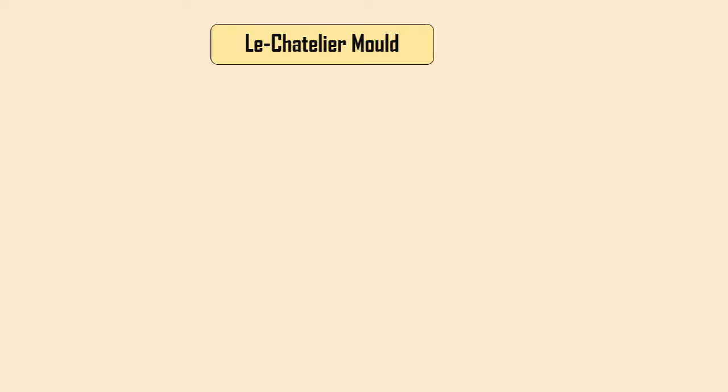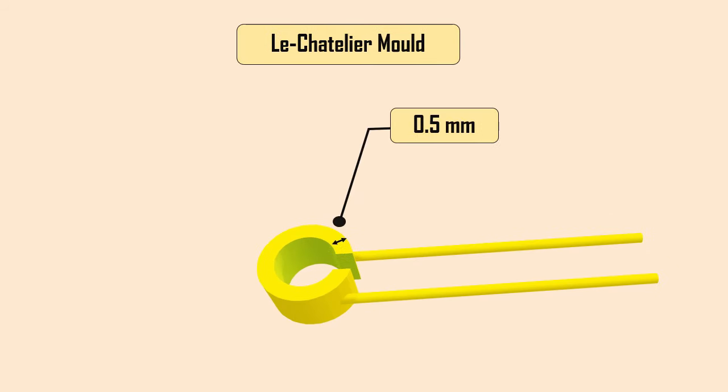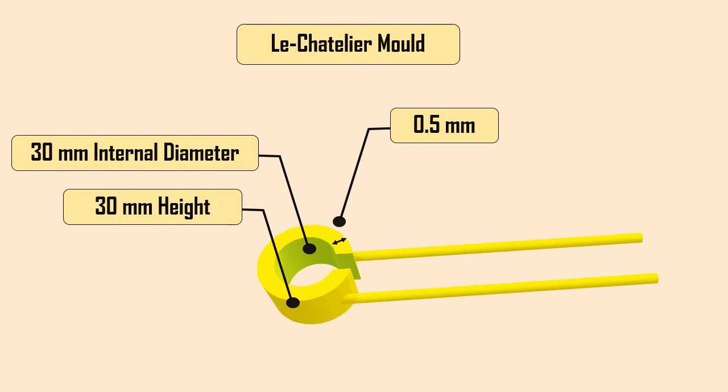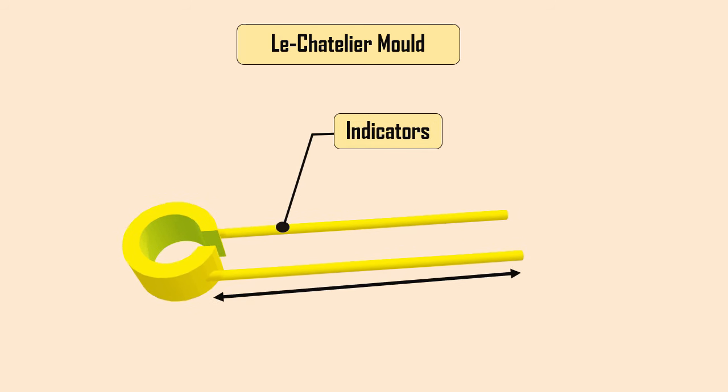The apparatus required for the test are Le Chatelier Mold, a small split cylinder made of metal with a thickness of 0.5 mm, forms a 30 mm internal diameter and 30 mm height. On either side of the split, indicators with pointed ends of length 165 mm is attached. The mold must be kept separated by not more than 0.5 mm.